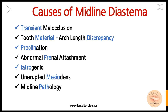Enumerating the causes of midline diastema: transient malocclusion during mixed dentition stage, also referred to as the ugly duckling stage; tooth material arc length discrepancy; proclination; abnormal frenal attachment; iatrogenic; unerupted mesiodens; and midline pathology. These are the different causes of midline diastema. Let's discuss them in short.